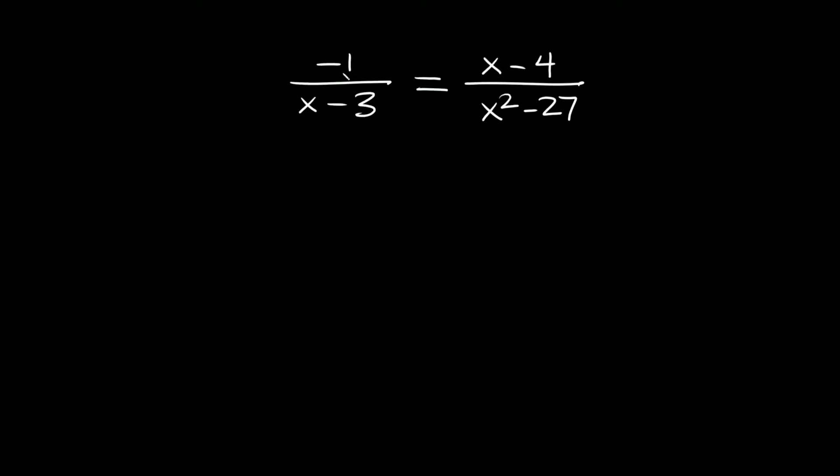Here's the last one we'll do. We have negative 1 over x minus 3 equals x minus 4 over x squared minus 27. So again we just want to cross multiply these.